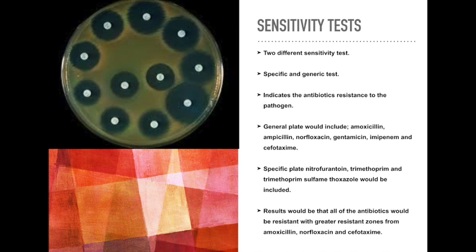Two different sensitivity tests should be performed: the first will be a specific test and the other will be a general test. The sensitivity test indicates the antibiotic resistance of the pathogen, and will be done on two MHA agars. The general plate would include amoxicillin, ampicillin, norfloxacin, gentamicin, imipenem, and cefotaxime. Whilst on the specific plate, nitrofurantoin, trimethoprim, and trimethoprim-sulfamethoxazole would be included. The results would show resistance to all of the antibiotics, with the greatest resistance zones specifically from amoxicillin, norfloxacin, and cefotaxime.